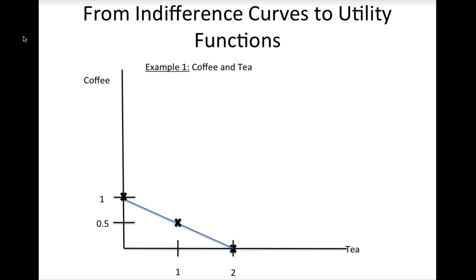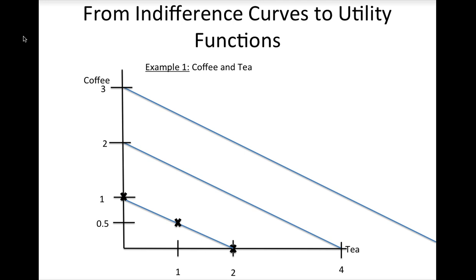Let's start with one of our examples from last lesson illustrating a consumer's preferences for coffee and tea. In this example, the consumer views coffee and tea as substitutes and requires two cups of tea to substitute for each cup of coffee. Note that the indifference curve in this picture is only one of this consumer's indifference curves. There is another higher indifference curve which represents combinations of coffee and tea that the consumer likes better. Each indifference curve is parallel to the one below it — the only thing that changes is the value of the vertical intercept. We can use this property to derive a utility function.